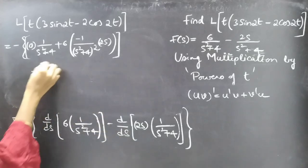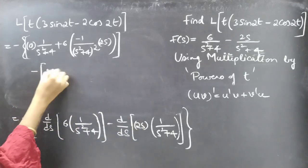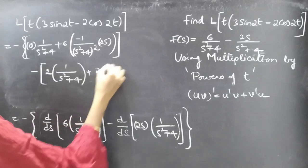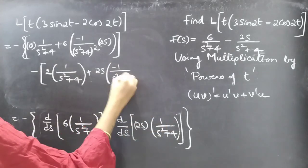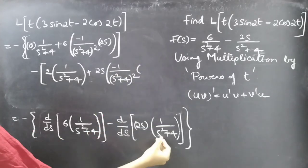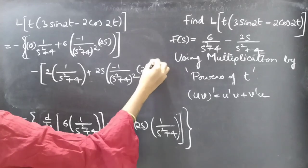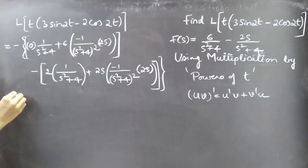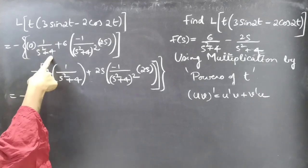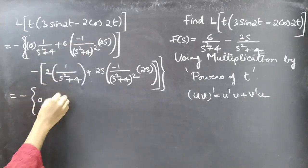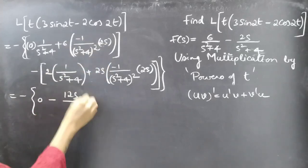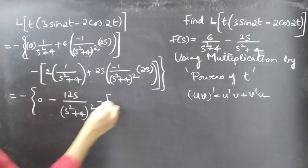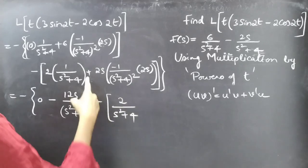For the second term: the derivative of 2s with respect to s is 2, times v which is 1/(s²+4), plus u times the derivative of v which is minus 2s/(s²+4)². This gives minus of [0 plus 6 times minus 2s/(s²+4)²], which equals minus 12s/(s²+4)², minus of [2/(s²+4) plus 2s times minus 2s/(s²+4)²].